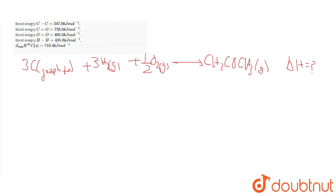According to the question, we can extract: 3 C graphite to 3 C gas is 3 times 718.4, which equals 2155.2 kilojoules.